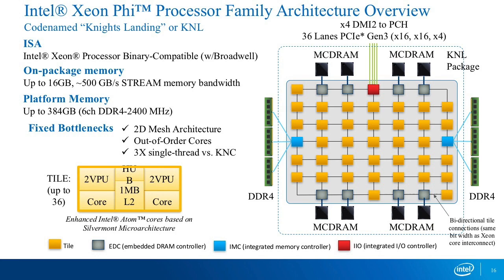Each tile is a dual-core tile. Inside there is a shared 1 megabyte L2 cache — private to a tile but shared between the two cores. We have two cores, two VPUs, and a hub. One issue with how we depict tiles: the VPUs are not extra units on the tile — they are actually integral to the core, but for marketing reasons we call them out separately.